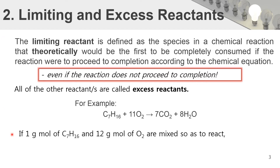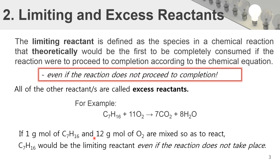Let us take an example in which one mole of heptane reacts with 12 moles of oxygen. We are deviating from the balanced chemical equation, which specifies a 1-to-11 ratio, and we are adding a 1-to-12 ratio. We can see that heptane will be consumed earlier compared to oxygen, and 1 mole of oxygen will remain unreacted. So heptane is considered the limiting reactant.